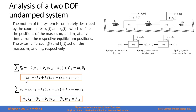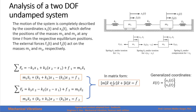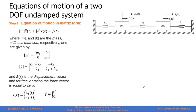We can write these equations with all the variables describing the motion on one side and the external forces on the other side. We can write these two equations as one equation in matrix form, with generalized coordinates x1 and x2. The mass matrix is diagonal, so the system is decoupled in terms of inertia. The stiffness matrix is symmetric and coupled.